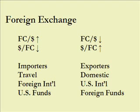On the right side, when the foreign currency per dollar falls — meaning the dollar rises per foreign currency — we see the reverse. Exporters have a better time of it because the foreign currency buys more dollars. Domestic firms competing against foreign imports benefit because those foreign products become more expensive. U.S. firms with an international base repatriating foreign currencies see those currencies buying more dollars, and you'd probably want to be in foreign funds.